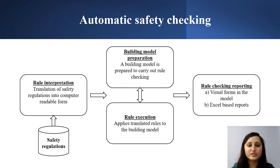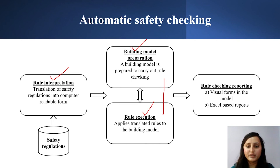There are four components of automatic safety checking. The first one is rule interpretation, which involves the translation of human-readable safety regulations into computer-readable form. The second one is building model preparation, which involves building a model in which we execute the converted rules. The third one is rule execution, where we apply the translated rules into the built model. The fourth one is rule checking reporting, where we get our reports or results — either in visual form within the model, or Excel-based reports.